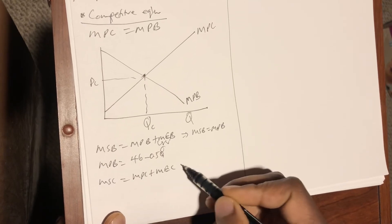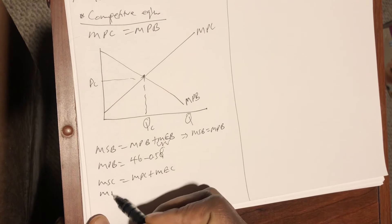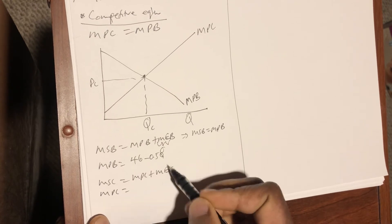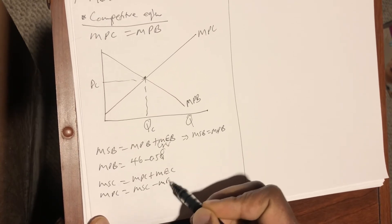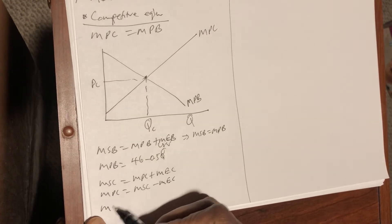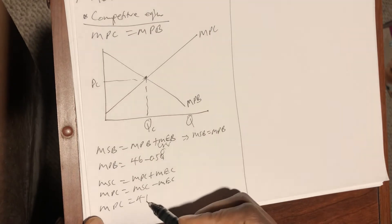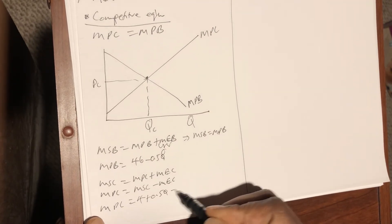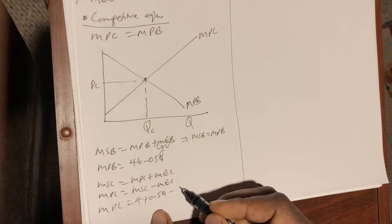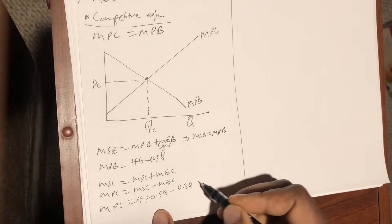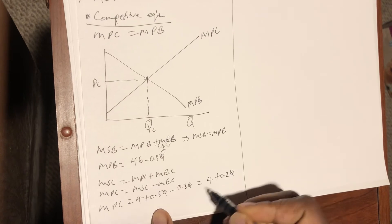Similarly, MSC = MPC + MEC, which implies MPC = MSC − MEC. So MPC = (4 + 0.5Q) − 0.3Q = 4 + 0.2Q.